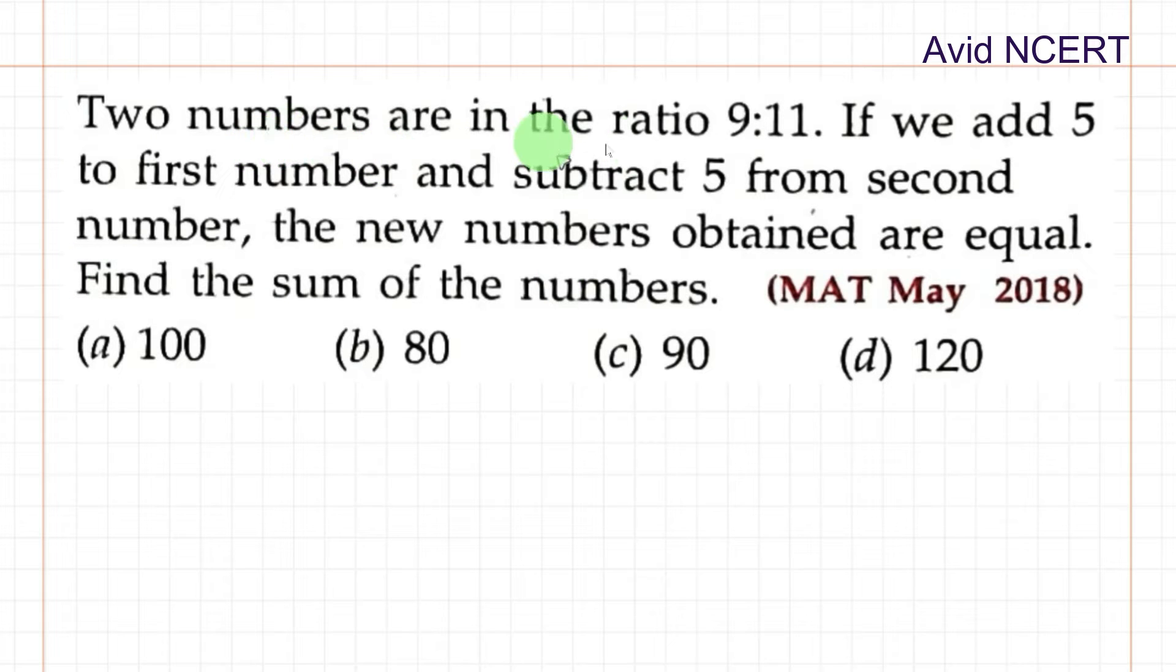So from the first sentence, the two numbers are in the ratio 9 is to 11. When they say two different numbers, we'll go for two different variables. You can take any variables you want - it could be a, b, m, n, anything. I'll take x is to y and they are in the ratio of 9 is to 11.